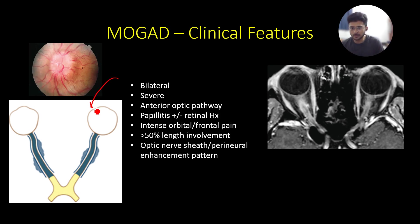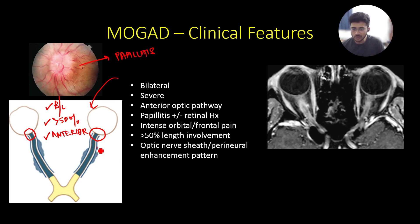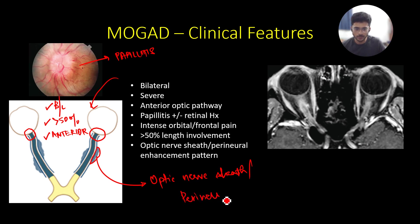Looking at optic nerve involvement: first, there is bilateral involvement. Second, there is a significant length of optic nerve involved — definitely more than 50 percent of the optic nerve length. Third, there is predominant anterior optic pathway involvement. It can also classically involve the optic nerve heads, presenting as papillitis. A unique radiological feature is optic nerve sheath enhancement, also known as perineural enhancement pattern.